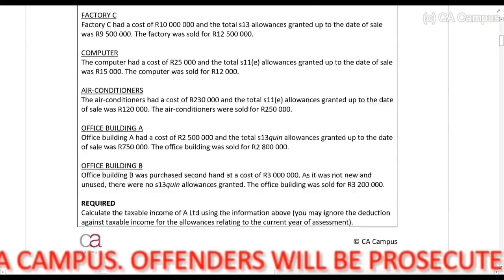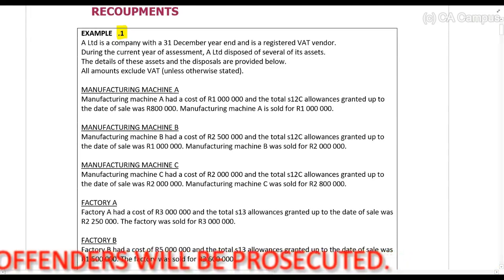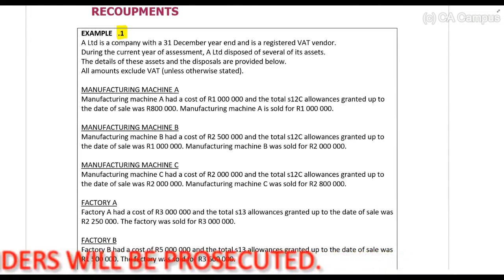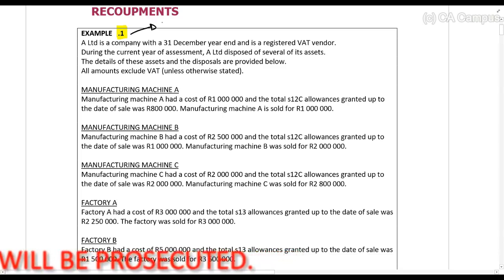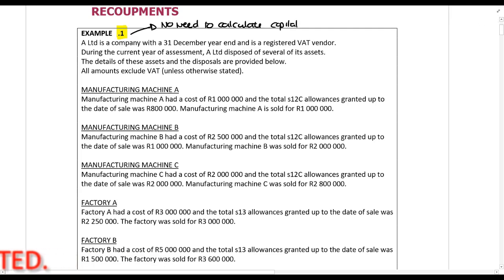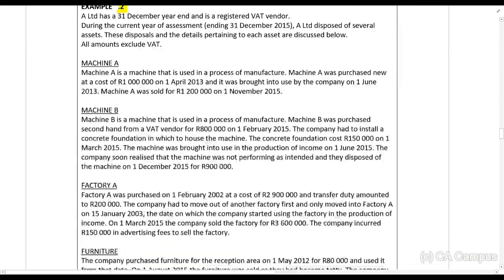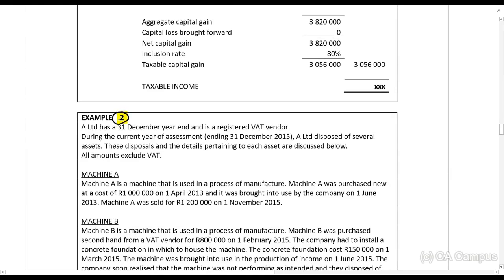I'm going to spend most of my time on example one. I'm not going to do every single one with you because they're all the same, so I'll do one or two so you get into the habit of it. What I want you to understand about example one is there is no need to calculate capital allowances — in this example it is given to you. In an exam situation you'll have to calculate it yourself, and there are plenty of examples of that in part two.